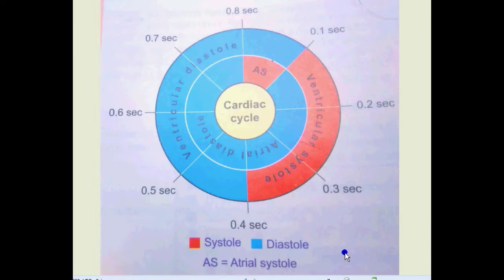This diagram shows the timings of the cardiac cycle. The whole circle is divided into eight divisions of 0.1 seconds. Here we have atrial systole, 0.1 seconds; atrial diastole, 0.7 seconds; ventricle systole, 0.3 seconds; and ventricle diastole, 0.5 seconds.